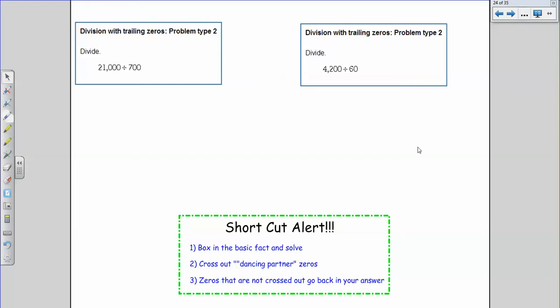Hi ZMSers! Today we're looking at our Alex topic of division with trailing zeros problem type 2. This is going to be a little bit more complicated than problem type 1.